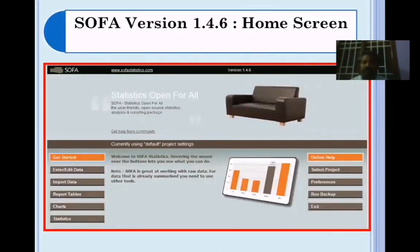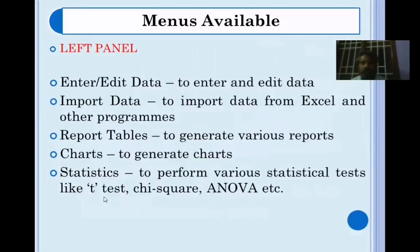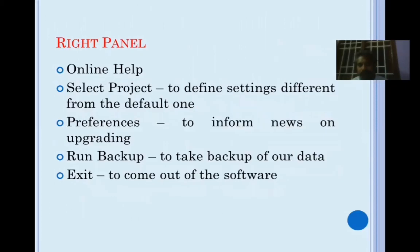This is the homepage of SOFA Statistics version 1.4.6. It has two panels: the left side has provisions for entering and editing data, importing data, reporting tables, creating charts, and conducting statistical tests. The right side has a panel for online help, setting preferences, taking a backup of data, and exiting the software.